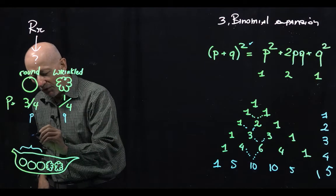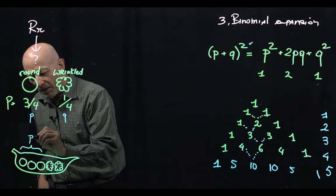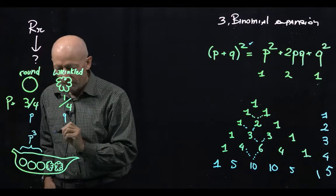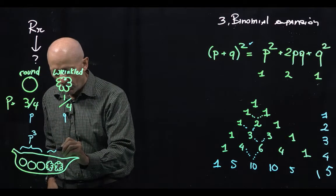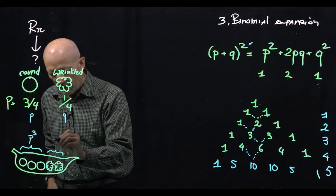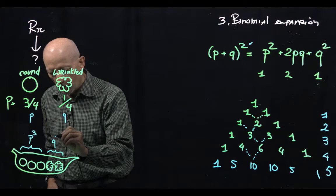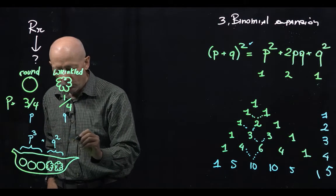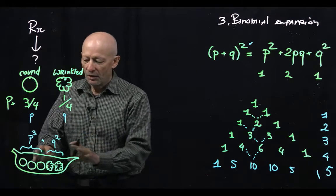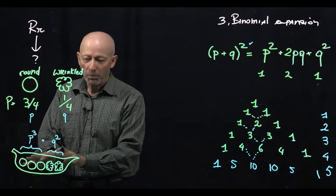Our probability of those 3 is p to the third power. The probability of these 2 is q squared. We multiply these 2 and we get the probability of this particular pod.